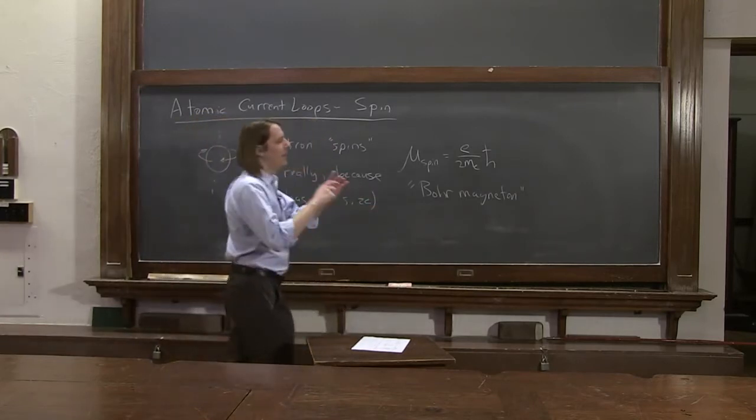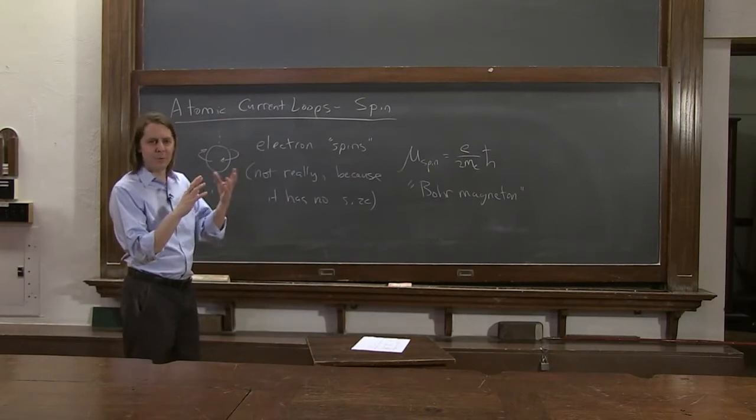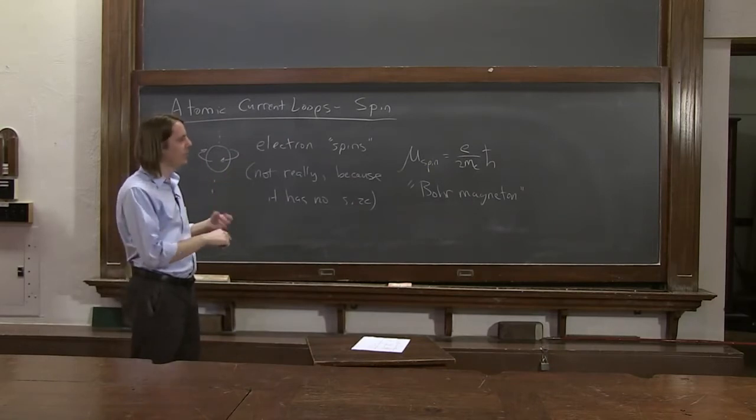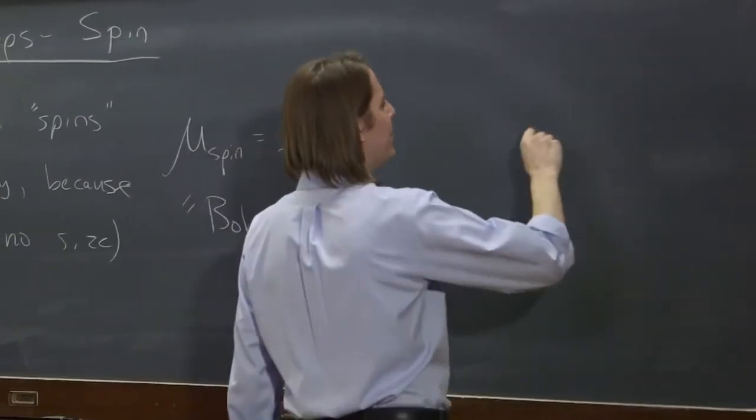So there you have it. We have magnetic moments in the atom for a couple of reasons. We have electrons going around in orbits. We have electrons that we can imagine as spinning. And the magnetic moment of an atom is then pretty complicated.